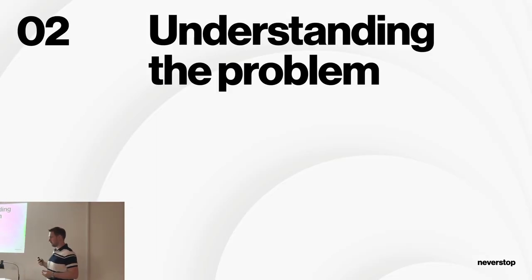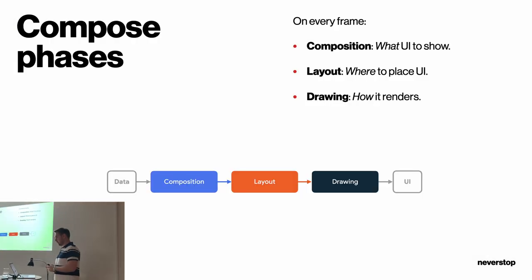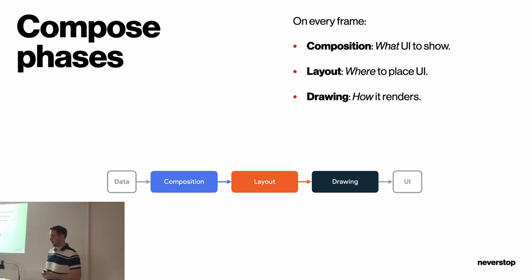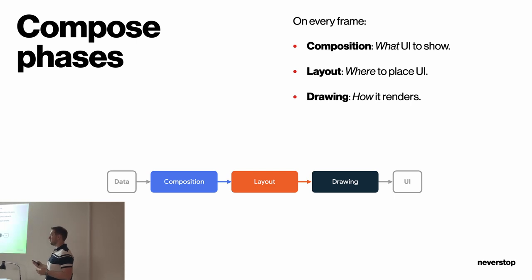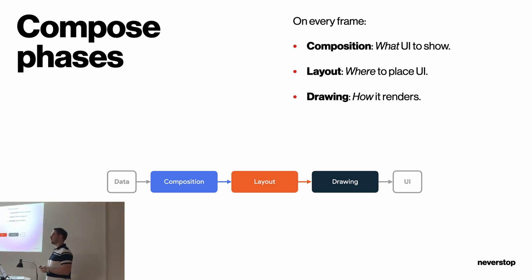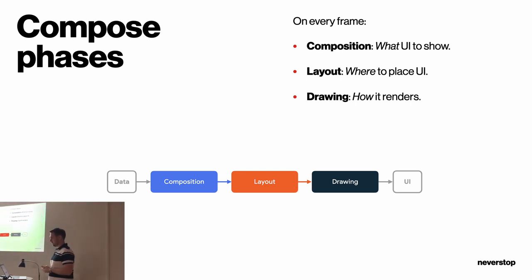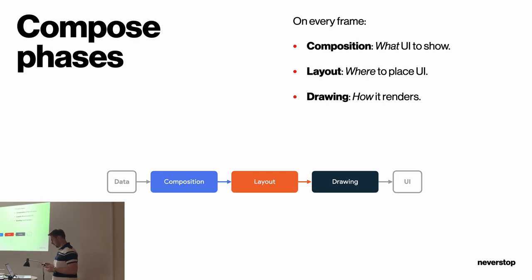With every problem, if we want to fix it, we need to understand what's going on under the hood. Compose has three phases that run on every frame. The first one is composition — what UI to show. That's the code in your composable functions. Next is layout — where to place the UI, so layout components like box, row, column, or modifier offset. And next is drawing, which figures out how to render it on the canvas.